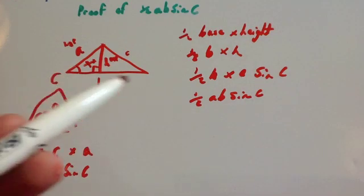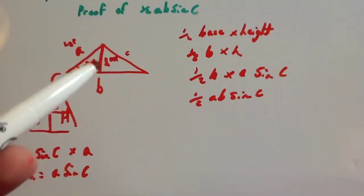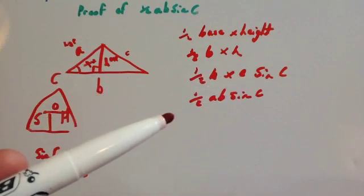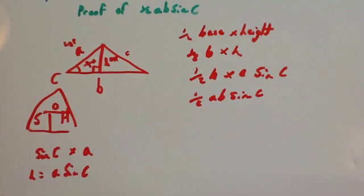So the half times the base, and using basic trigonometry to get the height, you get that to be equal to a sine C. So then the whole thing is a half a b sine C.